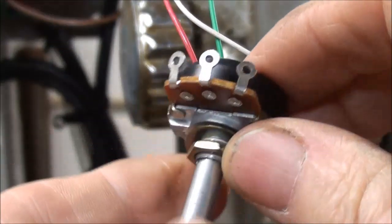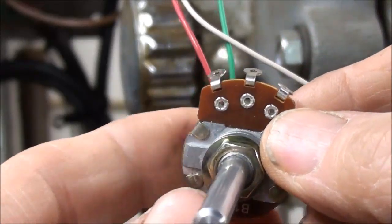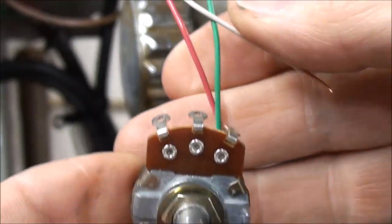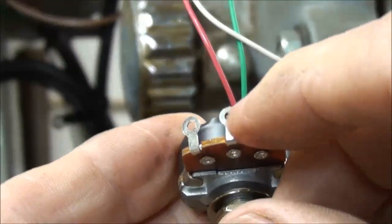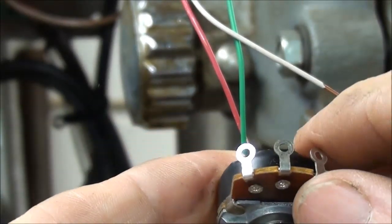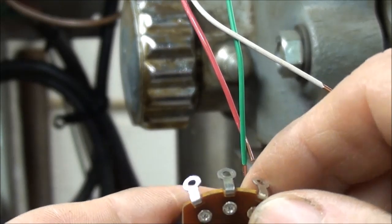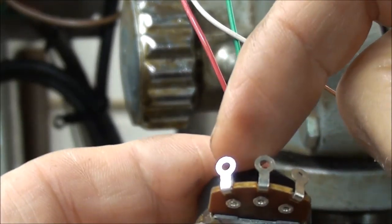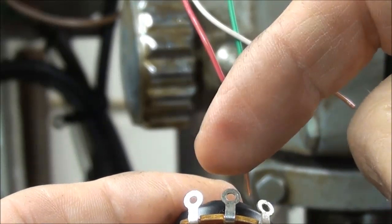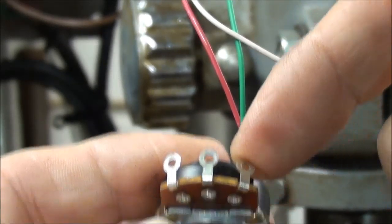The next thing that I will do off camera is I'm going to fasten the three wires onto the potentiometer and solder them, and I will do that off camera. And again, the order will be red, white, and green.